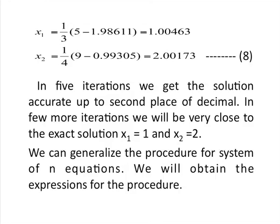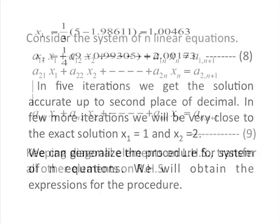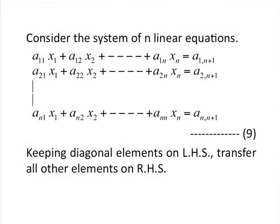We can generalize this process for a system of n equations. On your screen you can see how n simultaneous equations will appear — represented by coefficients, variables, and a constant on the right-hand side. We have n such equations. We keep the diagonal element on the left-hand side and transfer all other elements to the right-hand side. The diagonal elements are those with the same index for both the coefficient and the variable — so for x1, the diagonal element is a11; for x2, it is a22; and for the general variable xi, it is aii.